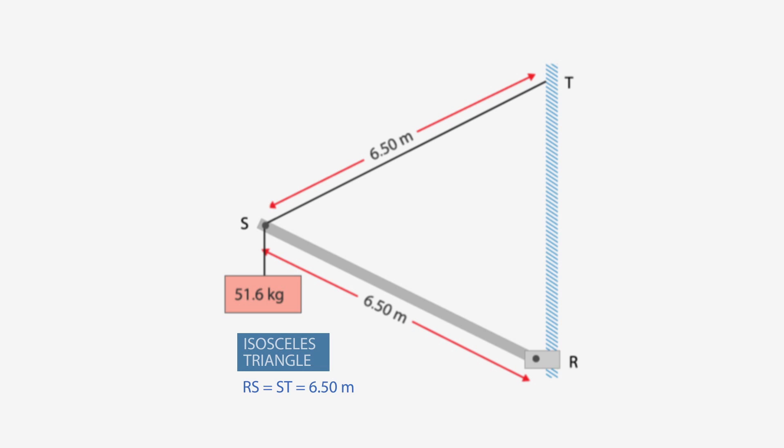So we have an isosceles triangle here. It specifies a 70 degree angle here. That means this angle will also be 70 degrees. And if we draw the horizontal line from point S over to the wall, we're going to bisect the length of TR, and we're also going to bisect this angle out here at point S.